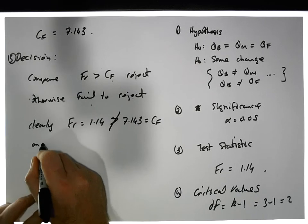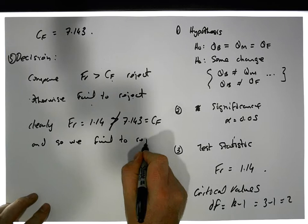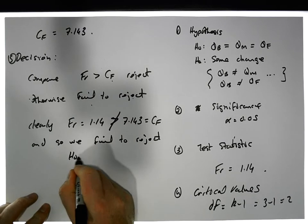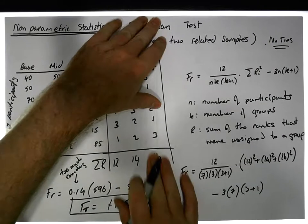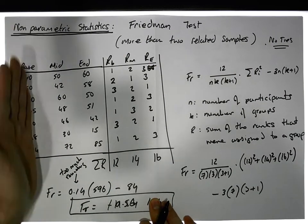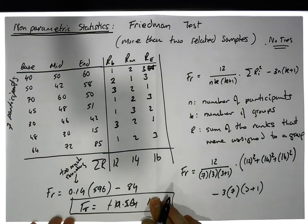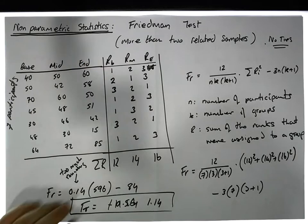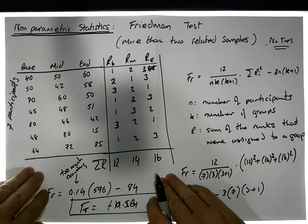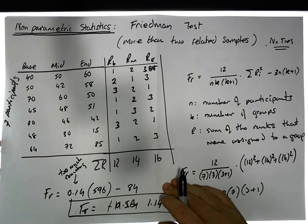We fail to reject H0. There is no evidence to suggest that the intervention had an effect — no observed effect across baseline, midpoint, and endpoint. We fail to reject the null hypothesis.